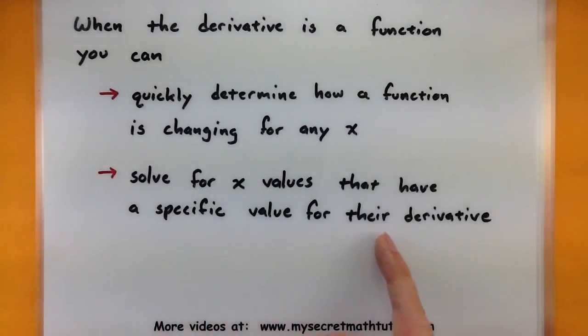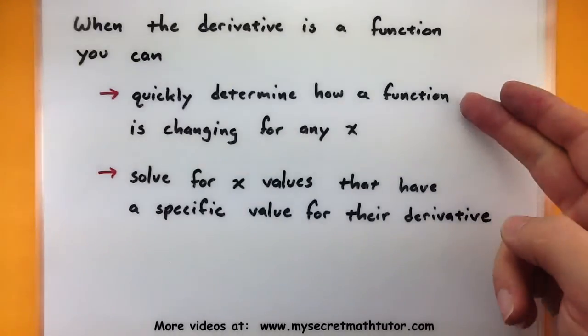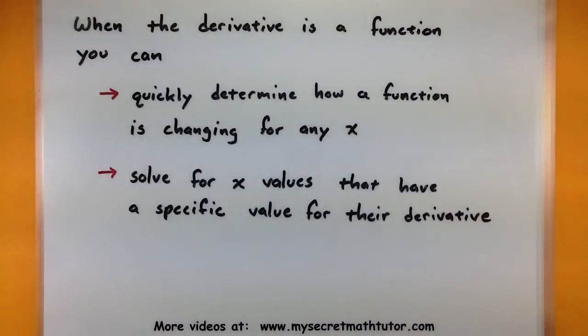Also, you can solve for x values that have a specific value of their derivative. So what if you want all places on the graph where the derivative is equal to 3? You'll be able to do that very quickly. Now these are just two advantages that we'll immediately get from the derivative, but there's many, many more to come.